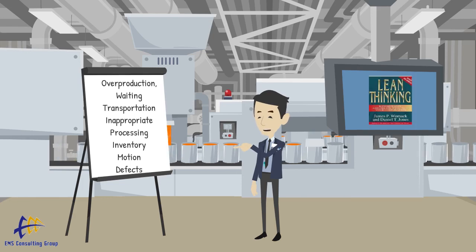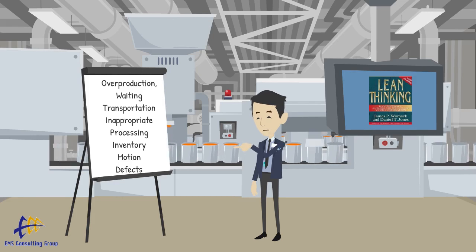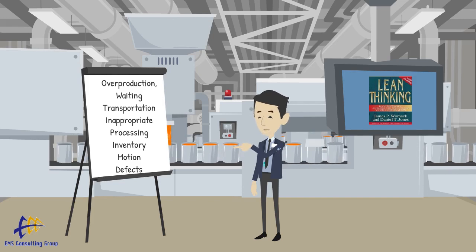Later on, in a book called Lean Thinking, an eighth waste was identified: underutilizing employee creativity and input. This is really a separate category of waste, and we will talk about it more in the context of lean culture during a future OPEX Minute.